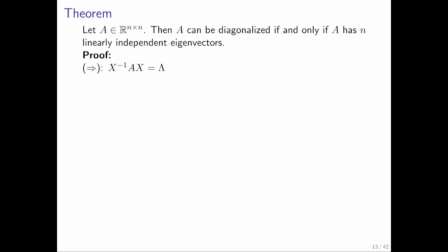Often when you try to prove an if and only if, you prove it in one direction first and then in the other direction. So what we're going to start with is assume that A can be diagonalized, and we're going to then prove that A has n linearly independent eigenvectors.